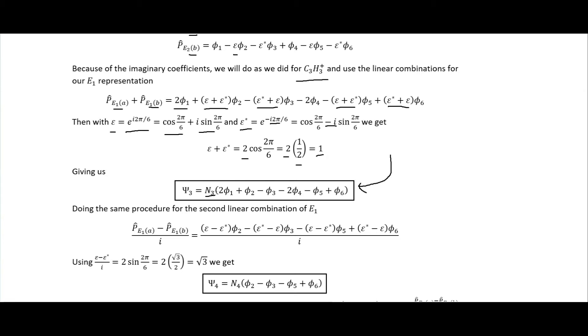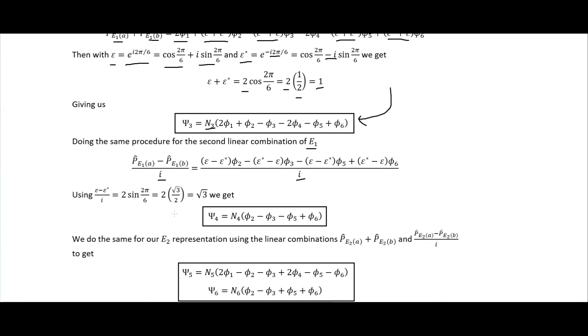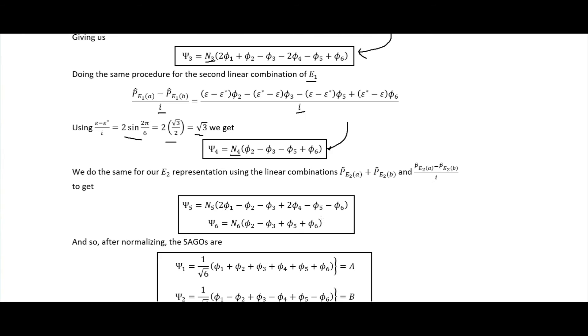And so that will ultimately give us the 2 sine of 2 pi over 6. So we end up getting this, the square root of 3, but since we're normalizing we can just sort of drop that square root of 3, but we get this for our fourth symmetry adapted group orbital. Then we do the same thing for our E2 representation using this linear combination and this linear combination that will get us these symmetry adapted group orbitals here.